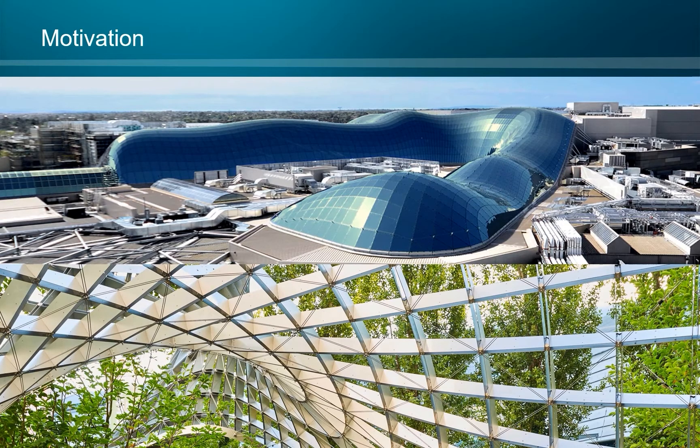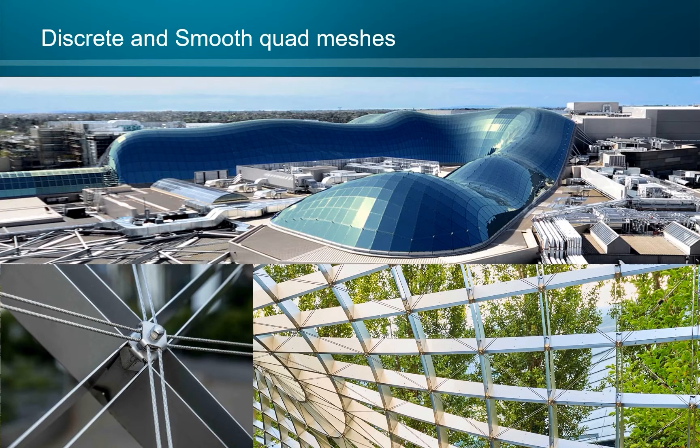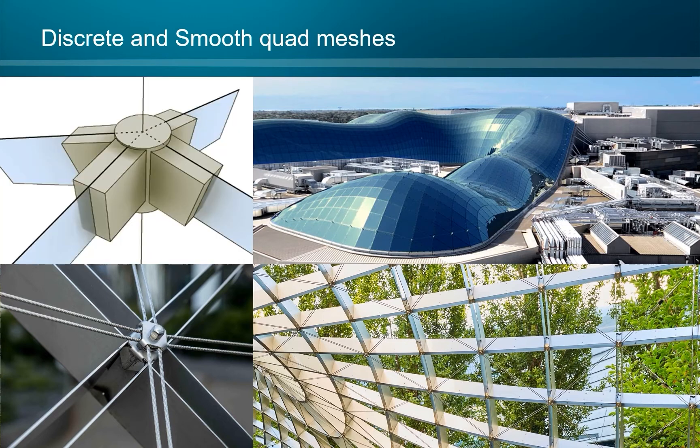Our work is motivated by the importance of quadrilateral structures in architecture. On the top we see a fully discrete structure from planar quad panels. Below is a quad structure from smooth elements. Nodes in the latter case are easy to understand and angles well defined. Here we have a node where elements meet at the right angle. Above is a discrete version of a right angled node but expressing that is not straightforward.